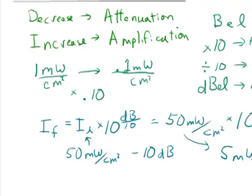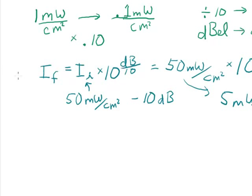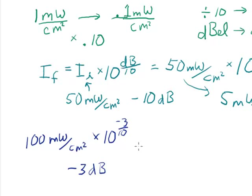Okay, well let's look at another example. I want to look at, let's say I have a 100 milliwatt intense signal per centimeter squared, and I'm multiplying by, let's say I want to decrease this by 3 decibels. So I have a change of negative 3 decibels. So this is going to be negative 3 over 10.